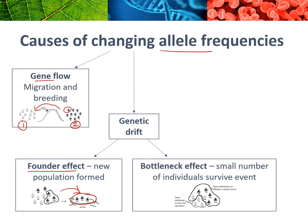The other version of genetic drift is called the bottleneck effect. This is where there's some kind of chance event — it could be a flood — where a large section of the population dies. The remaining few individuals don't represent the original population, and as they survive and reproduce, their genes are the ones passed on. It's important to note that both of these are chance events, not natural selection — these organisms weren't more suited to their environment, they just survived by chance.